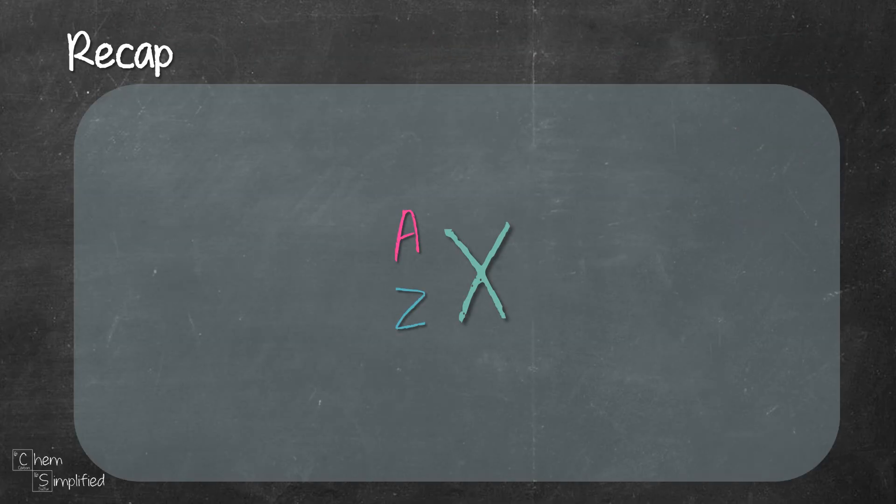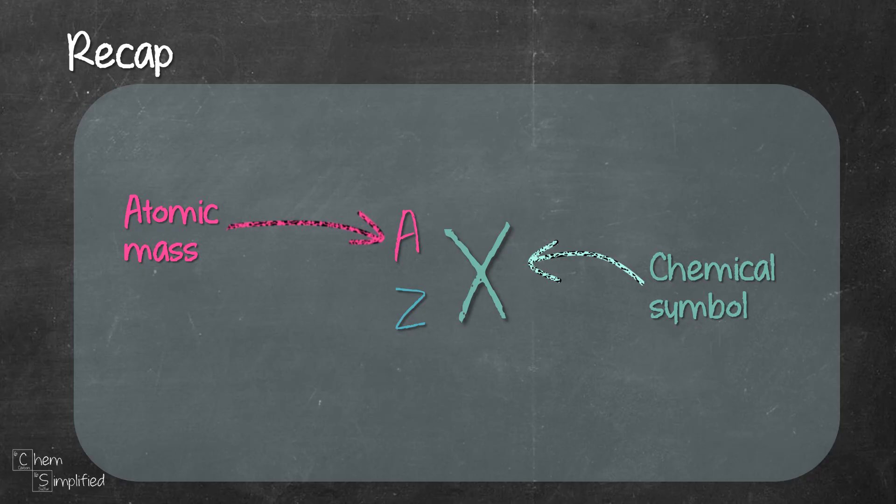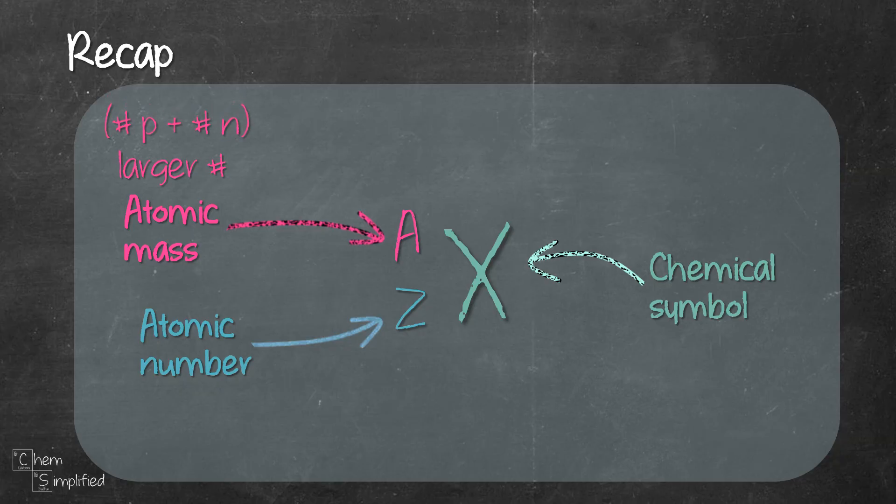To recap, we write the chemical symbol on the right and the atomic mass on the top left and followed by the atomic number on the bottom left. Atomic mass is the larger number that is found in the periodic table or it can be given by the question.